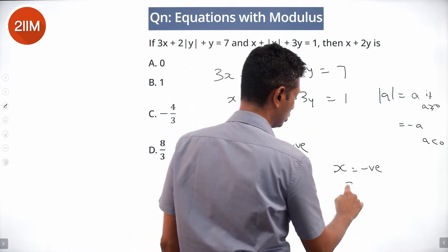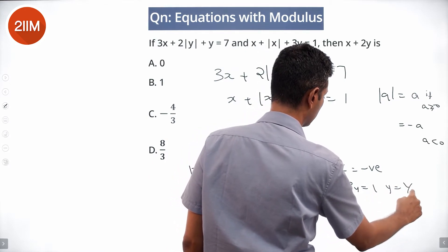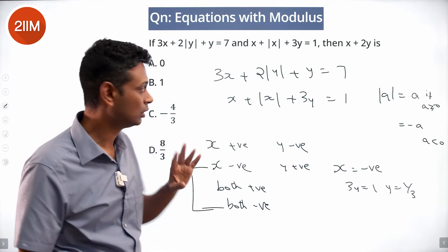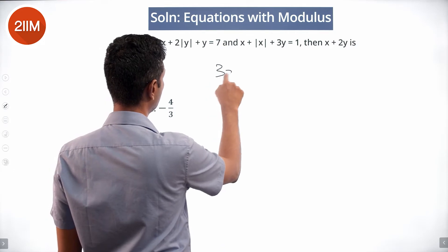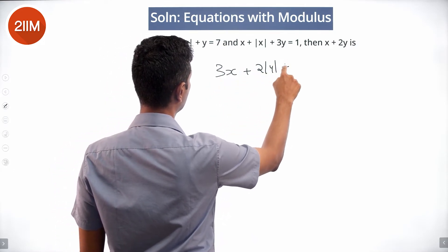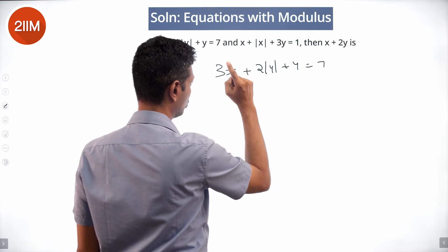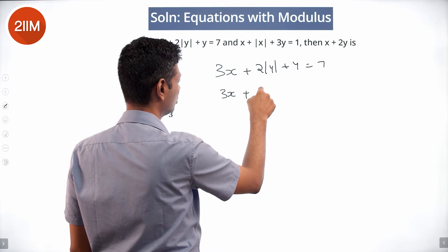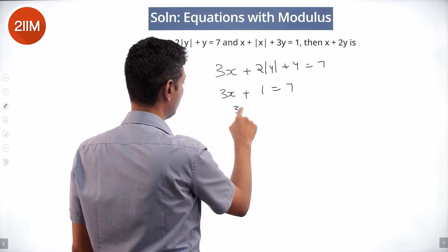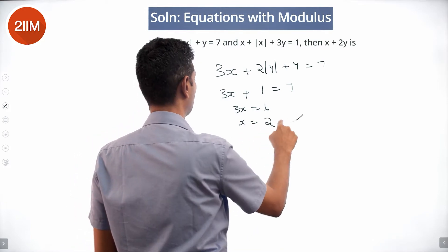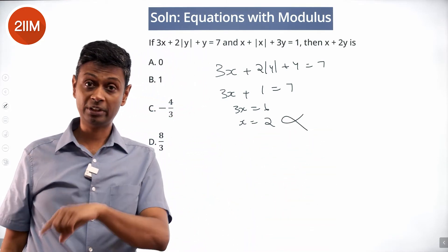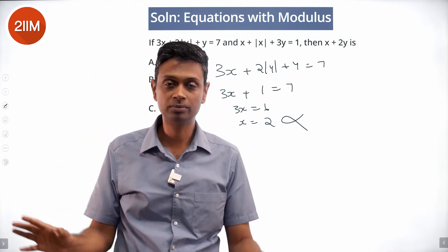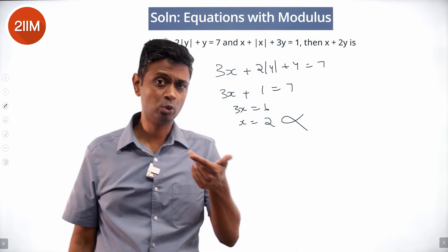If x is negative, x + |x| goes to 0, so the second equation becomes 3y = 1, giving y = 1/3. Now plug y = 1/3 into the first equation: 3x + 2|y| + y = 7. Since y = 1/3 > 0, |y| = y, so 3x + 2(1/3) + 1/3 = 7, meaning 3x + 1 = 7, so x = 2. But x = 2 is positive, contradicting our assumption that x is negative. So x negative is not possible.